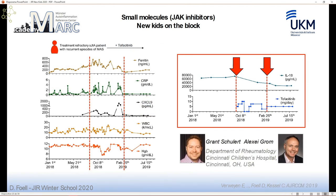If this model is correct, JAK-STAT inhibition might be a good way to treat MAS, perhaps as additive therapy. In a CPG repetitive injection mouse model of MAS-like disease, ruxolitinib significantly improved mice clinically and produced a dramatic reduction of IL-18 serum levels. Clinically, colleagues from Cincinnati treated a patient with severe refractory sJIA and recurrent MAS episodes and interstitial lung disease with tofacitinib. At a stable dose of 4 mg/day, they achieved clear reduction of IL-18 levels, paralleled by improvement in ferritin, CRP, CXCL9, and other parameters.